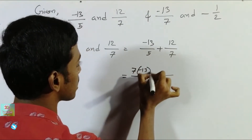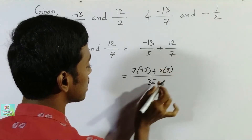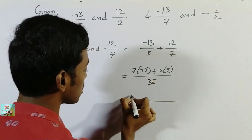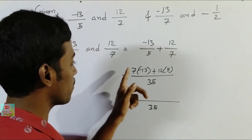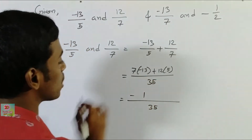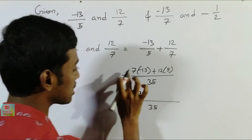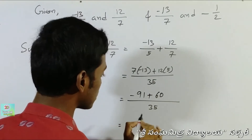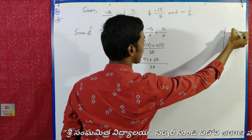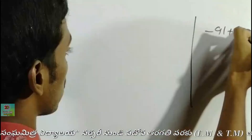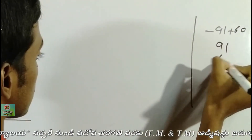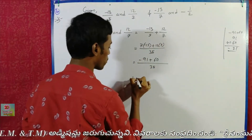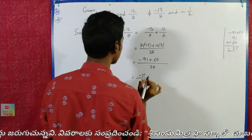So we get 35 in the denominator: 7 into minus 13 plus 12 into 5, because 35 divided by 7 gives 5. That means minus 91 plus 60. Since 91 minus 60 equals 31, the answer is minus 31 by 35. So the sum of minus 13 by 5 and 12 by 7 equals minus 31 by 35. This is equation 1.